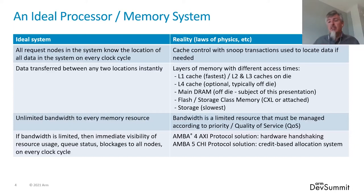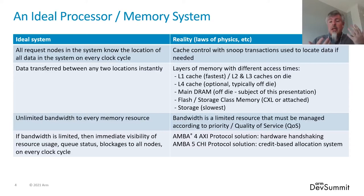If you need even deeper storage, there's flash or storage class memory, and then finally storage. Bandwidth is a limited resource that has to be managed according to quality of service and priority — we do that within the AMBA 5 CHI protocol. Another key difference with AMBA 5 CHI is the move away from hardware handshaking, which doesn't scale well across very large systems. AMBA 5 CHI allows for a credit-based allocation system, giving requester nodes much better data about what system resources are available.